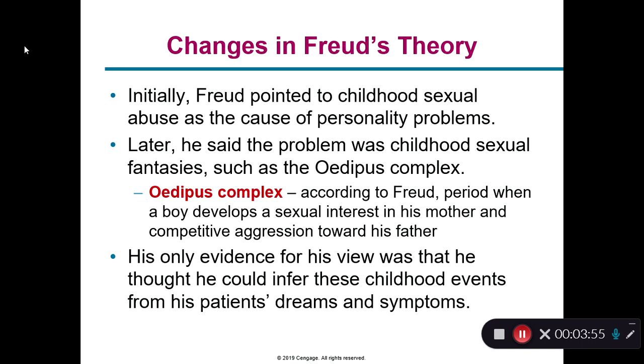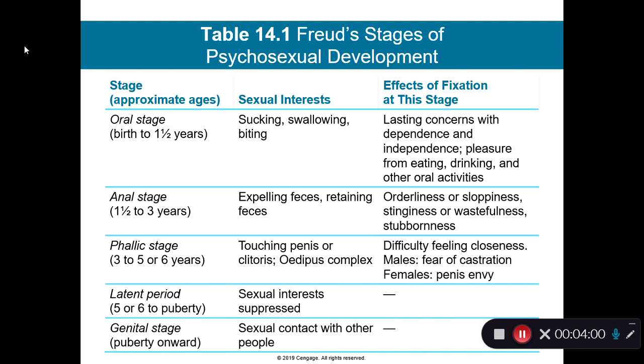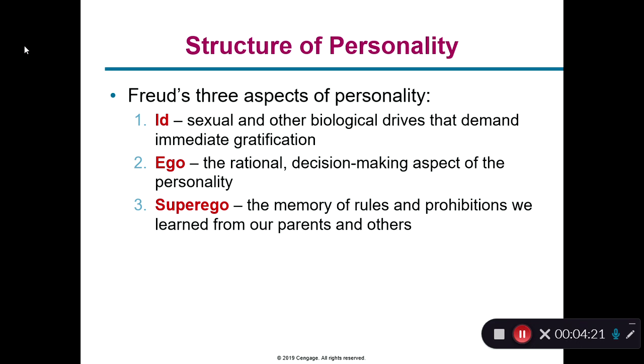One of the big critiques of Freud is that he started to look at childhood sexual issues and the psychosexual phases — the oral, anal, phallic, latent, and genital stages — and a lot of this is questionable. His dream theory and psychosexual development are interesting to read about, but is it accurate to modern lifespan developmental psychology? That's where you have to take some of it with a grain of salt, but it's still interesting to read.